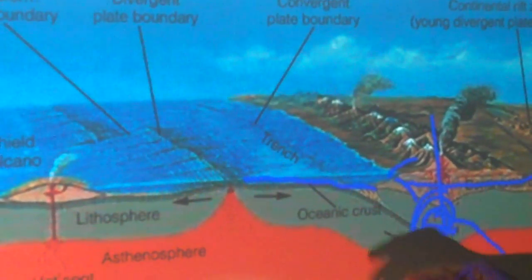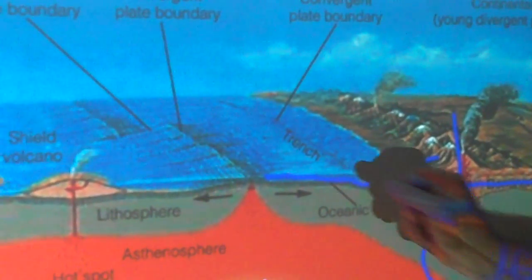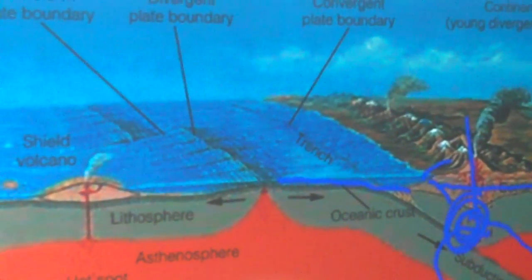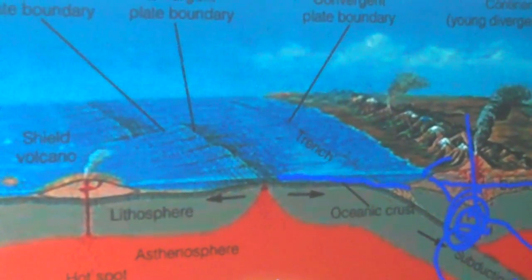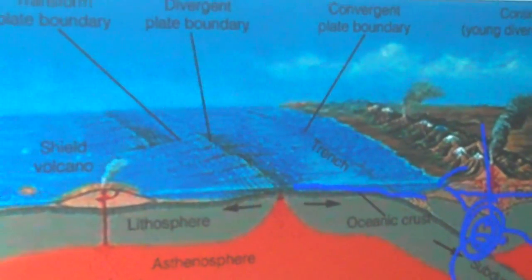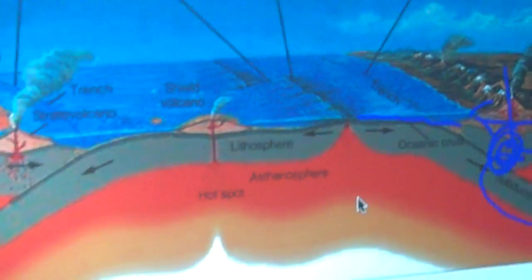The trenches form when you have the oceanic crust colliding. So those are the different types of plate boundaries that you need to know.